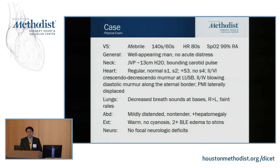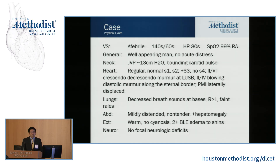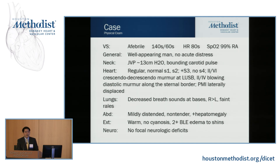On physical exam, he was afebrile. Blood pressure was in the 140s over 60s, so a pulse pressure in the 80s. Heart rate was in the 80s. He was oxygenating well on room air. He appeared well and was in no distress, but his jugular venous pressure was elevated at 13 centimeters of water and he had a bounding carotid pulse. Cardiac exam showed normal S1 and S2, but an S3 was audible. He had a two out of six crescendo-decrescendo murmur at the left upper sternal border and also a two out of four blowing diastolic murmur along the left sternal border. His PMI was laterally displaced. Lung exam showed decreased breath sounds at the bases, right more than left, and faint rales. His abdomen was mildly distended with hepatomegaly. Extremities were warm but with at least two-plus edema to the level of the shins.